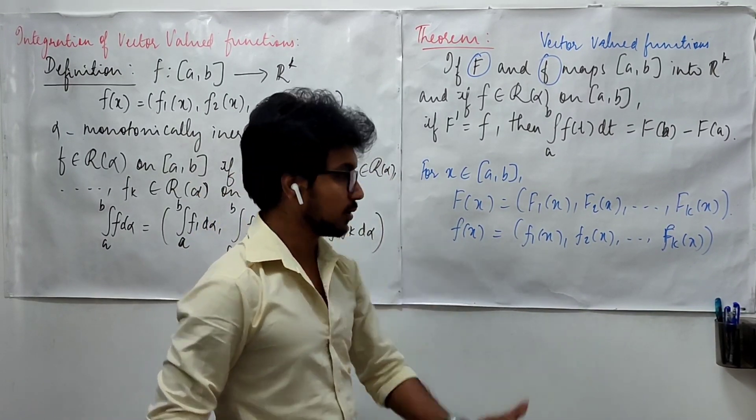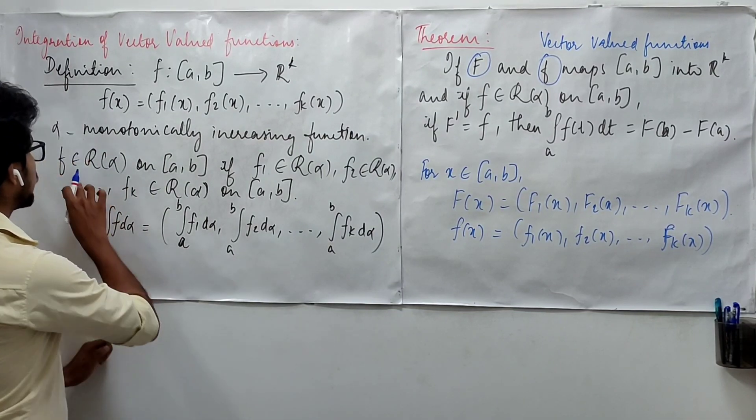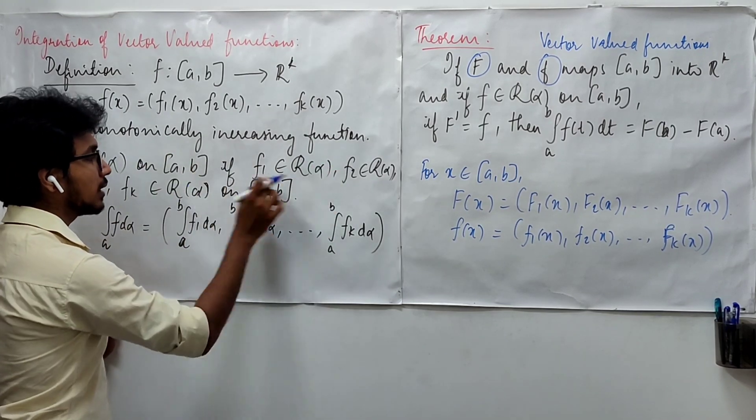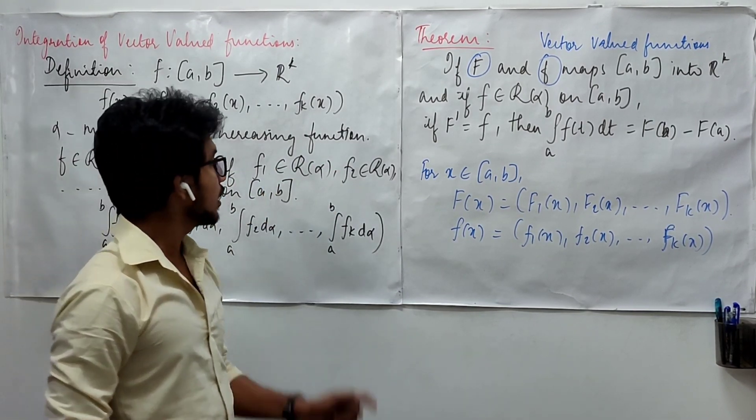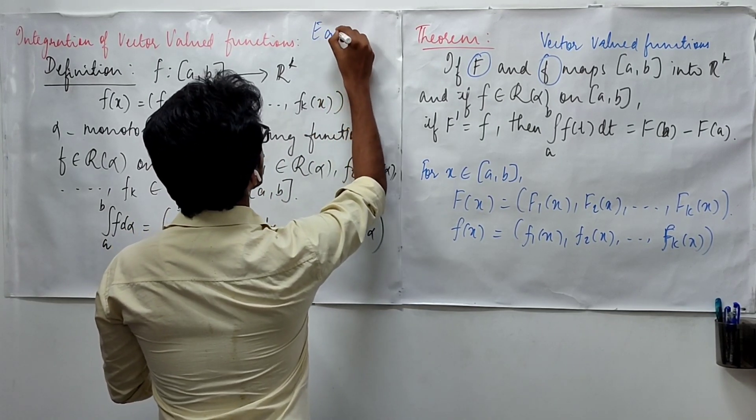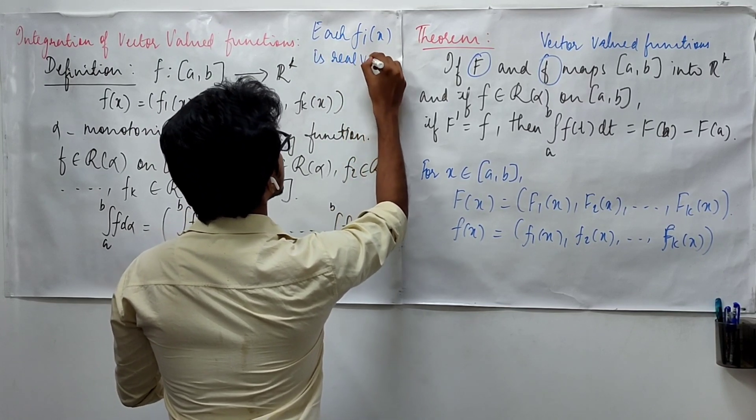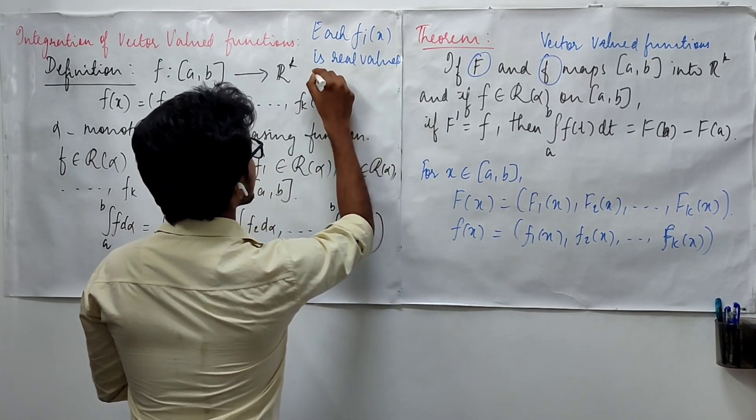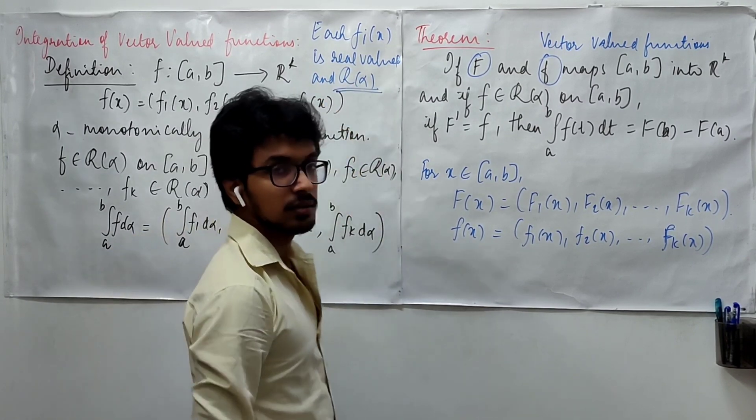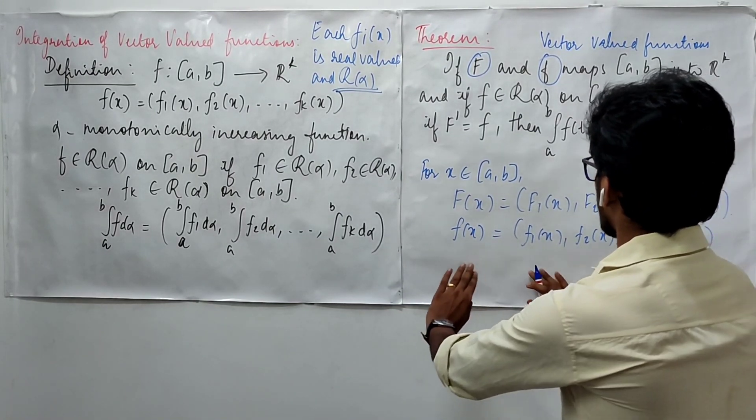As for now, just take a pass here and come back to here. We can say a vector valued function is Riemann-Stieltjes integrable if and only if its coordinates are Riemann-Stieltjes integrable. All these coordinates, each fi(x) is real valued and a member of this set, that is Riemann-Stieltjes integrable.